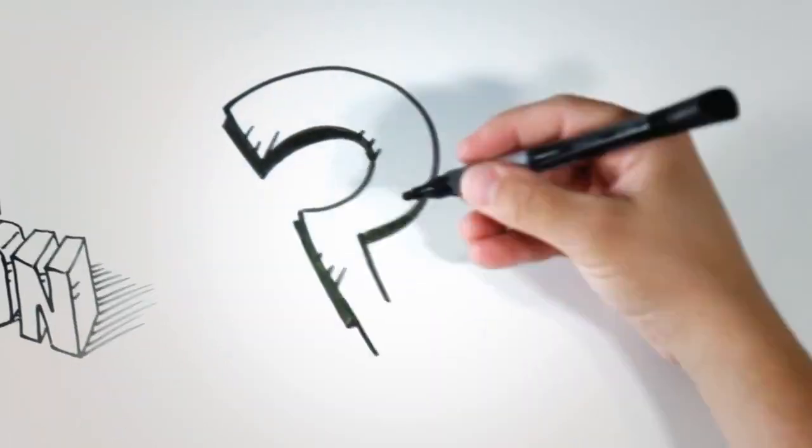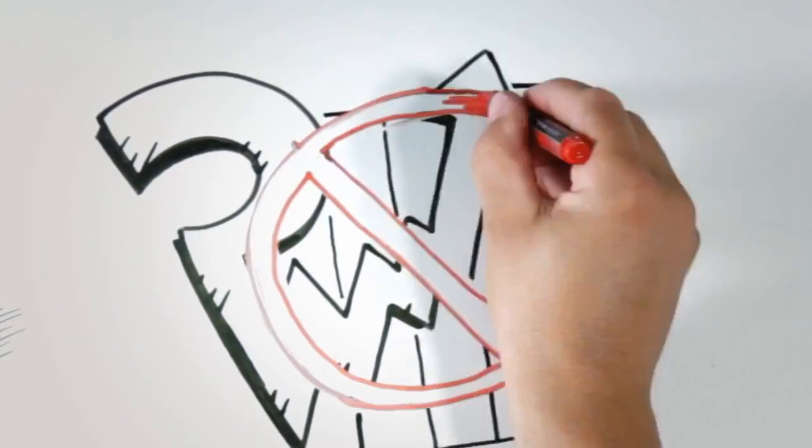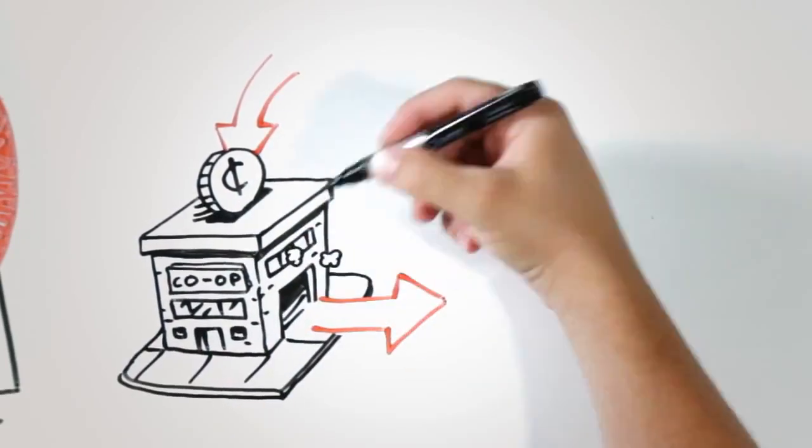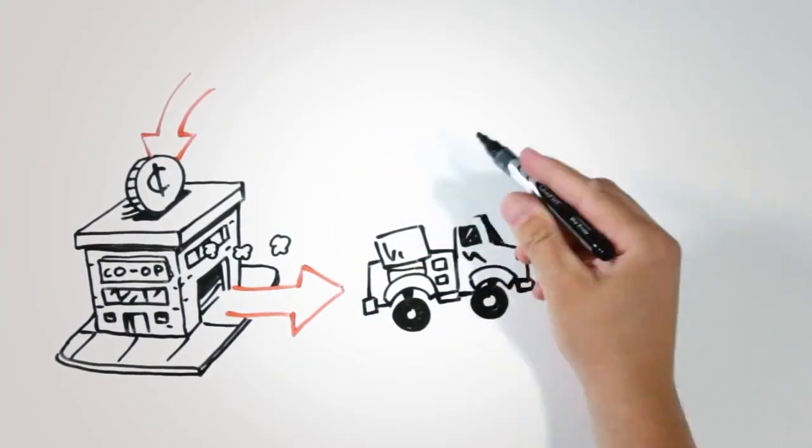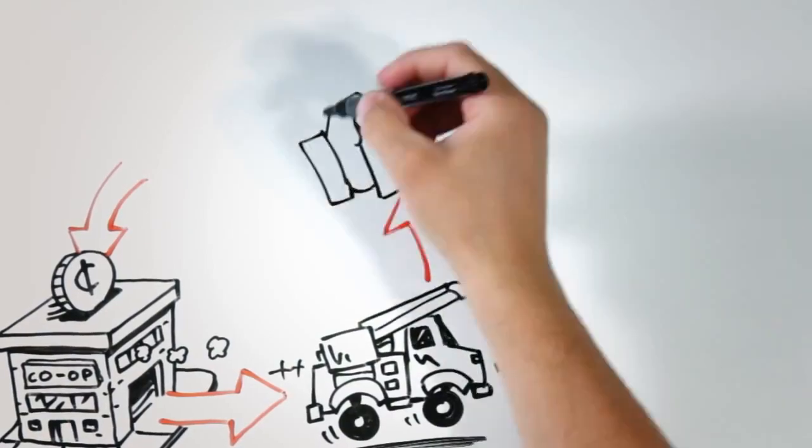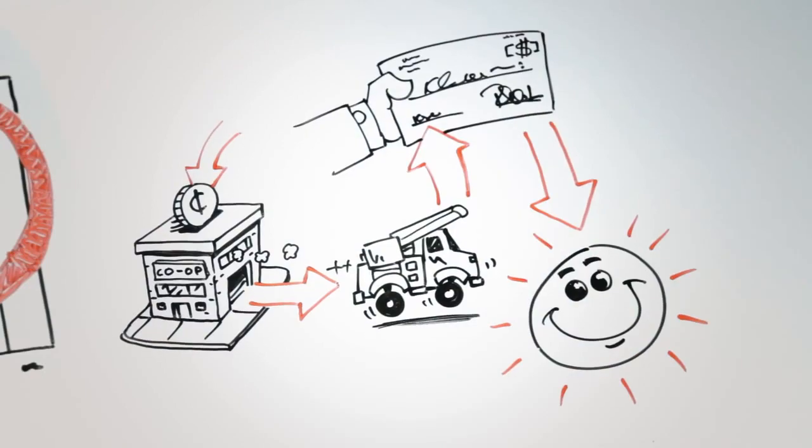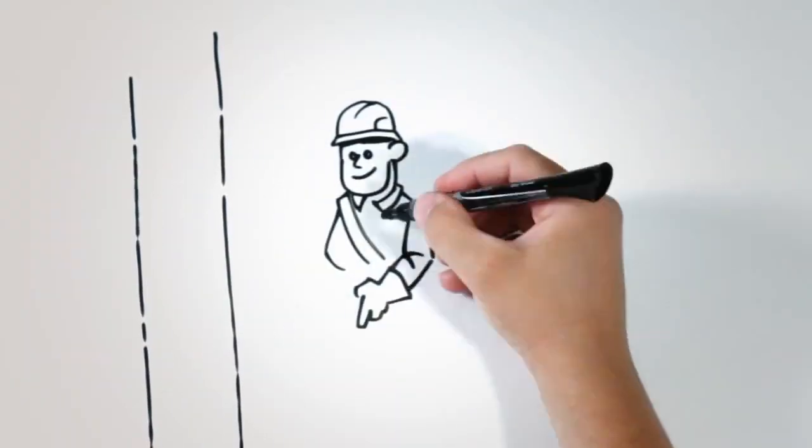So how do cooperatives work? First off, cooperatives are not-for-profit. Money comes in from members when they pay their electric bills. Money goes out to pay co-op expenses. A little bit is set aside for emergencies and the future. Any leftover is returned to members. Pretty sweet, huh? But it's not just about the money.